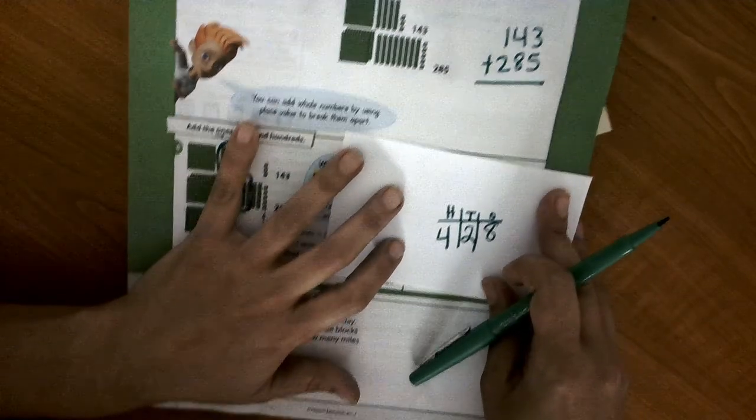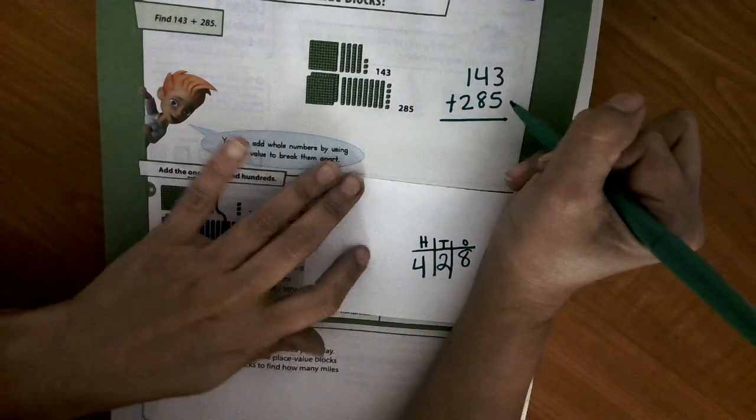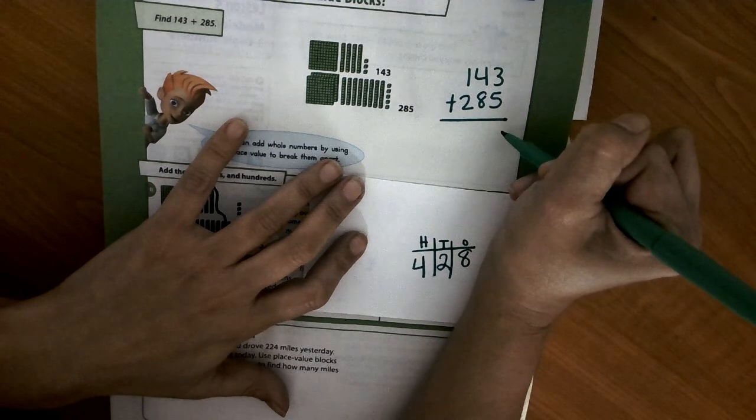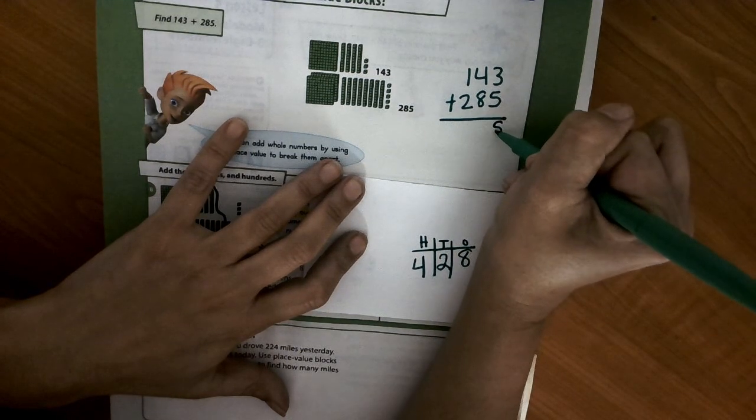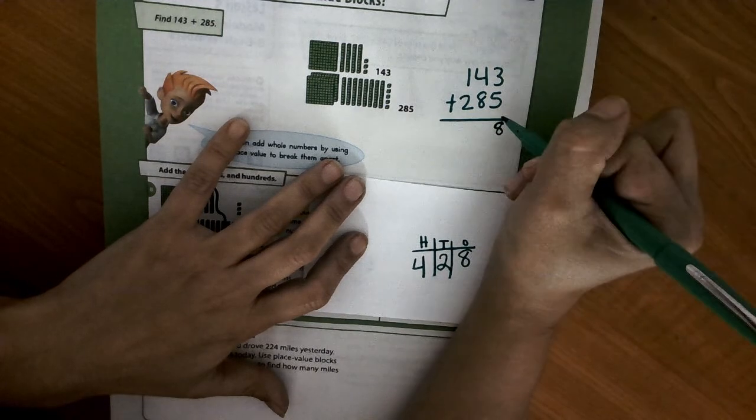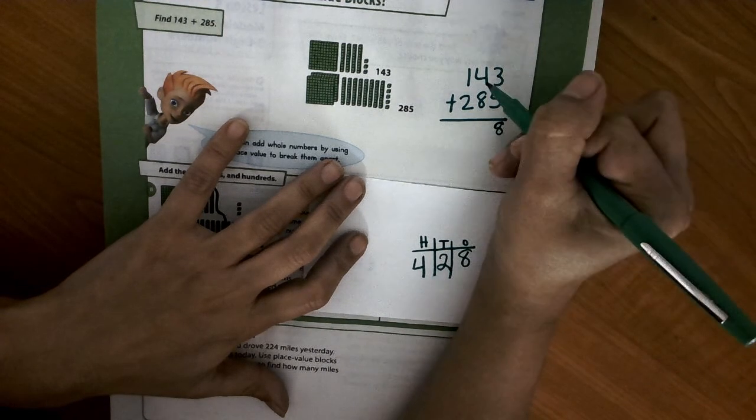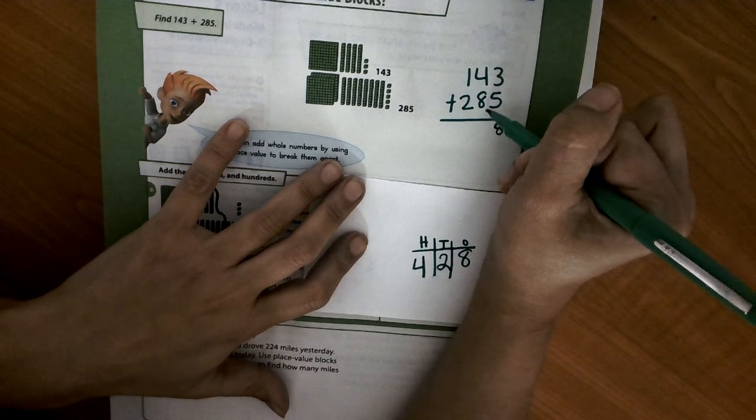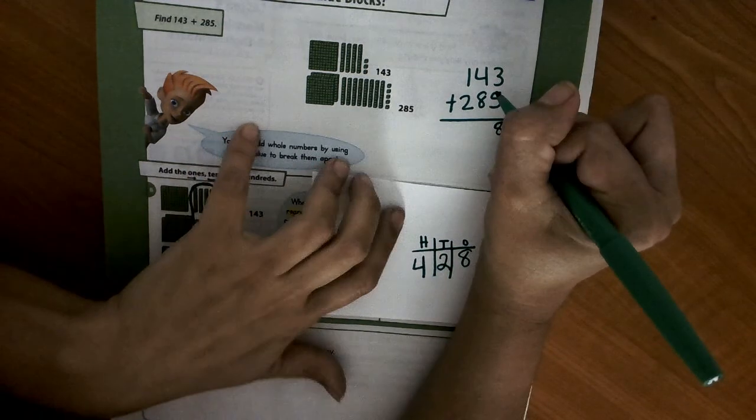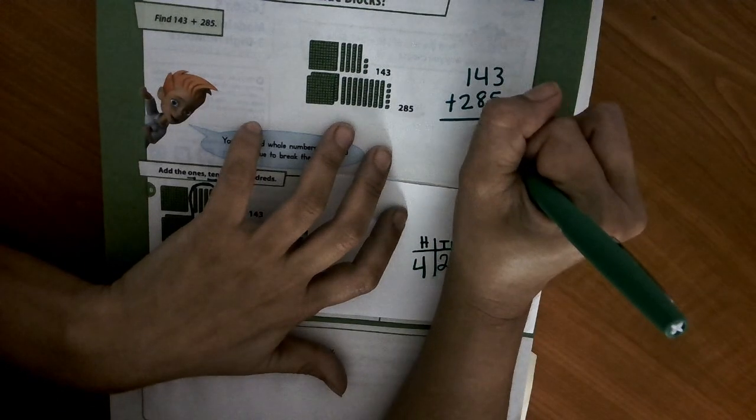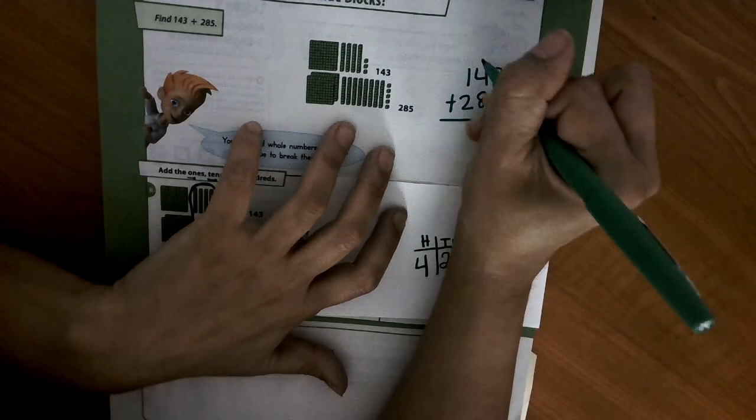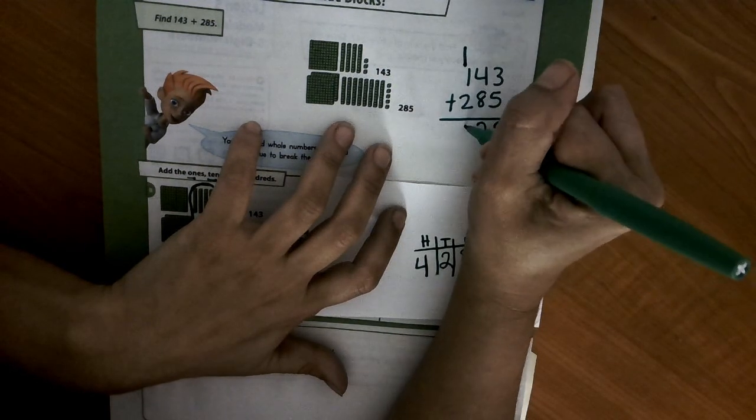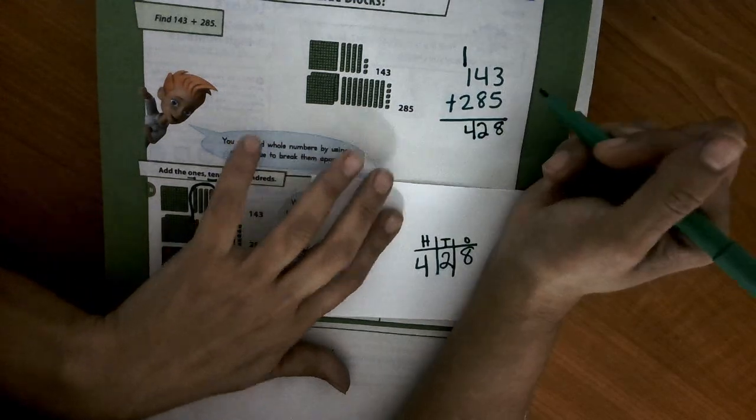Now, if we were doing it like this, we can always double check and see. 3 plus 5 is 8. Can I put 8 down? Yes, because it is less than 9. And then we add 4 plus 8. 4 plus 8 is 12. Can we put 12? No, because 12 is 10 or more. So we have to bring our 2 down and we carry our 1. 1 plus 1 is 2 plus 2 more is 4. And that is how we got 428.